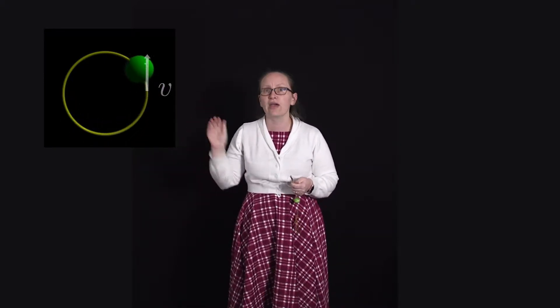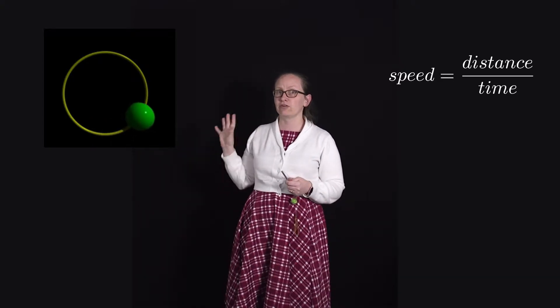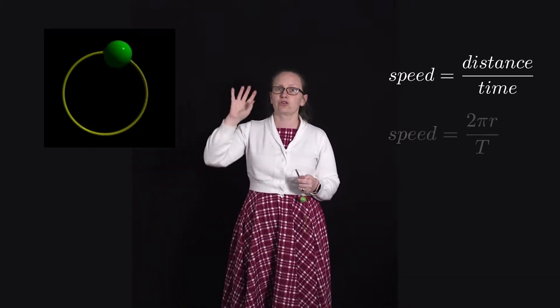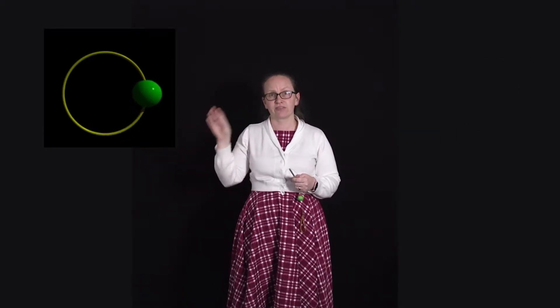I'll start by considering the case of uniform circular motion — when something is traveling with a constant speed around a circle. In this case the velocity is always changing, because the velocity is always tangent to the circle and the direction the object is moving is always changing, even though its speed remains constant. To work out the speed we use speed equals distance over time, so for uniform circular motion this is 2πr divided by T, the period — the time it takes to travel once around the circle.